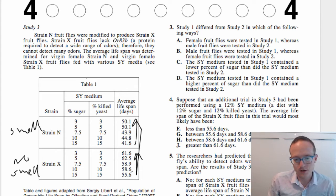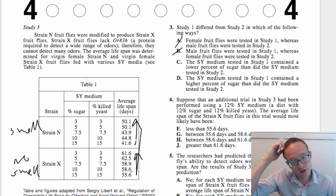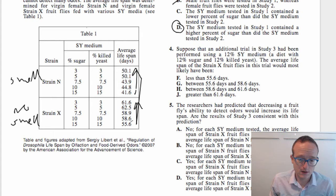Study one differed from study two in which of the following ways? So we've already talked a little bit about this. Study one and two are different in that they have different SY medium, right? Not female fruit flies. We're looking for SY medium. So study one contained a lower percentage of sugar, or study one contained a higher percentage of sugar. So if you remember, study one is 15%, study two is 5%. 15 is higher than 5, so it's gotta be study one.